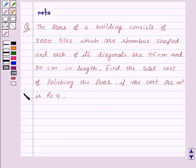Hi and welcome to the session. I am Neha and today I'll help you with the following question. The floor of a building consists of 3,000 tiles which are rhombus shaped, and each of its diagonals are 45 centimeters and 30 centimeters in length. Find the total cost of polishing the floor if the cost per meter square is rupees 4.